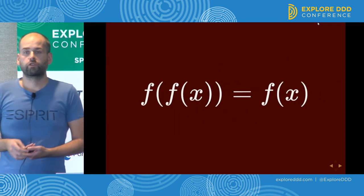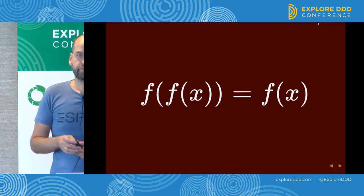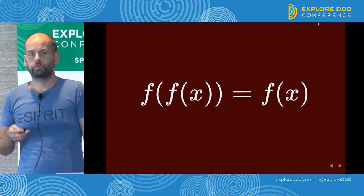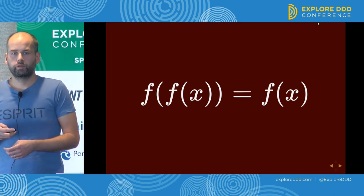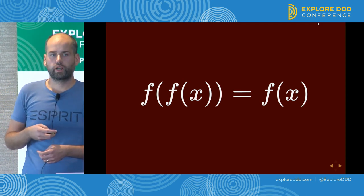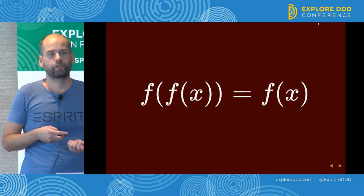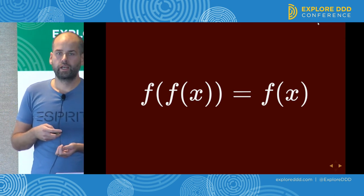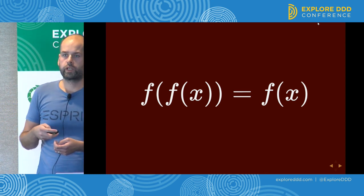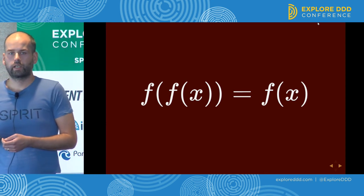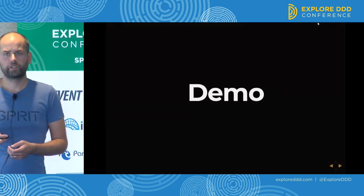They had a quite long brainstorming session during which they discovered a property called idempotence. Idempotence is well-defined in mathematics as a property of a function — a function is idempotent if you can apply it multiple times and the result of applying it twice is the same as applying it once. For our IT domain, an idempotent message processor can process a message multiple times and the side effects are the same as if it processed it once. And that was the end of sprint zero.